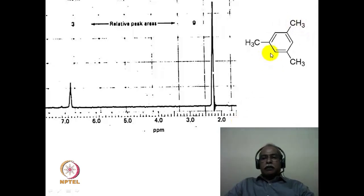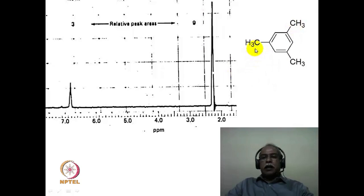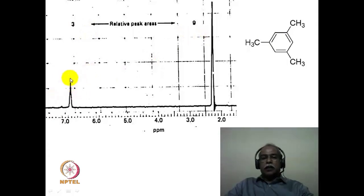This is the spectrum of mesitylene (1,3,5-trimethylbenzene), a C3-symmetric molecule. All three methyl groups are identical, giving a singlet of 9-hydrogen intensity. The three aromatic ring hydrogens are also chemically identical, appearing as a singlet of 3-hydrogen intensity. The intensity ratio of aromatic to methyl signal is 1:3.